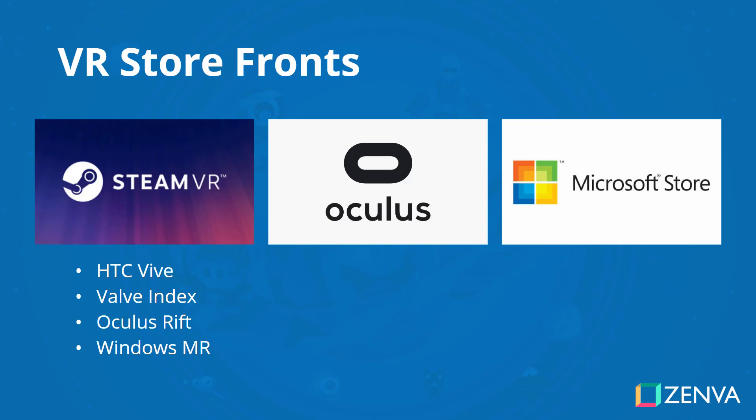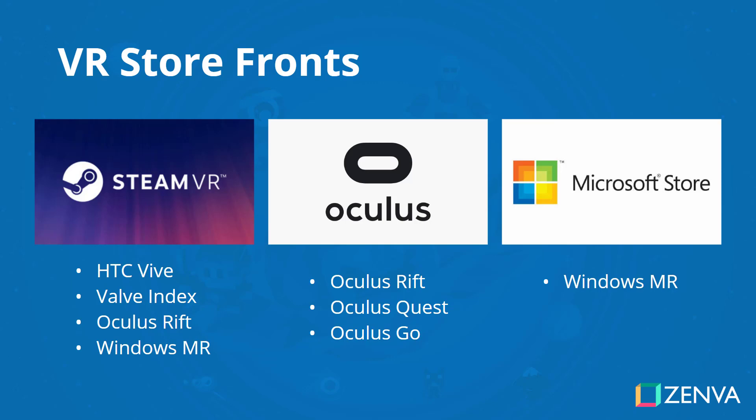On Steam you have the HTC Vive, the Valve Index, the Oculus Rift and the Windows Mixed Reality Headset. This is due to Steam having their OpenVR technology, which allows developers to build for any of these devices. All games developed on the OpenVR API can support all these devices. On the Oculus Store, apps are limited to just Oculus devices — the Rift, the Quest and the Go. And finally, the Microsoft Store is limited to just the Windows Mixed Reality Headset.